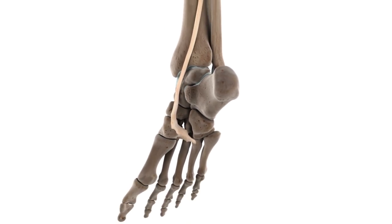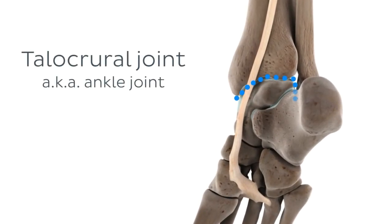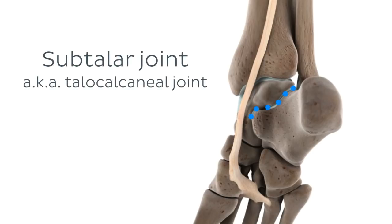Looking at these attachments is important as it allows us to see which joints will be involved with the movement of this muscle. We have two primary joints which the tibialis posterior works on. The first is the talocrural joint, commonly known as the ankle joint — a hinge joint formed by the malleoli of the tibia and fibula, which articulate with the talus bone of the foot. The other joint is the subtalar joint, also known as the talocalcaneal joint, as it involves the talus and calcaneus bones.